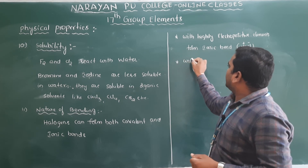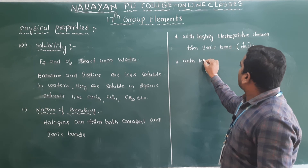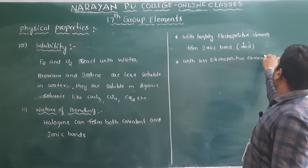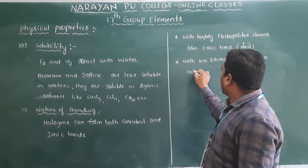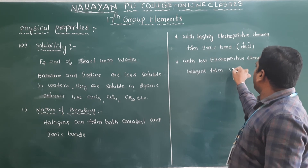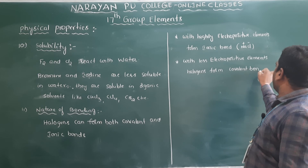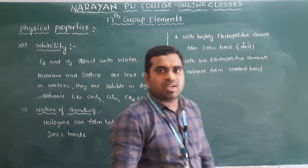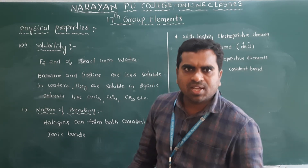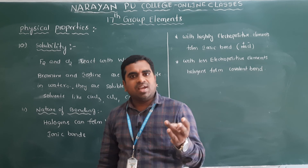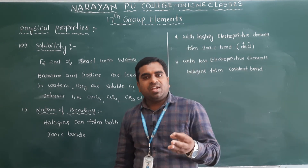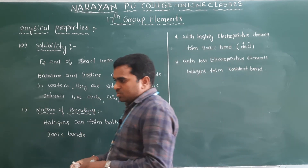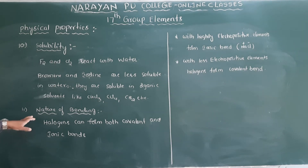With highly electropositive elements, halogens form ionic bonds. With less electropositive elements, halogens form covalent bonds. So halogens can form both ionic and covalent bonds. This completes the physical properties of 17th group elements: atomic and ionic radii, ionization enthalpy, electron gain enthalpy, electronegativity, physical state, atomicity, melting and boiling points, colour, solubility, and nature of bonding.